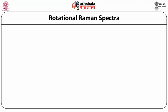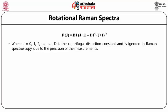Rotational Raman spectra. We know that F(J) is equal to BJ(J+1) minus DJ²(J+1)², where J = 0, 1, 2, etc. D is the centrifugal distortion constant and is ignored in Raman spectroscopy. Because the measurements are quite precise, one can neglect the distortion constant.